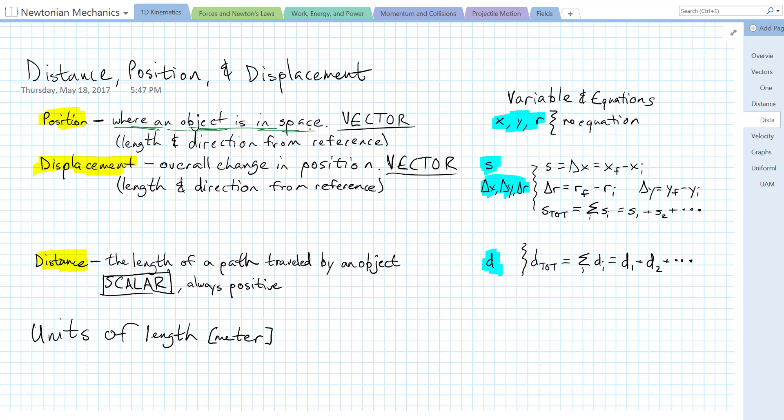If I say that you're 200 meters away from me, that doesn't tell where you are. I have to say that you're 200 meters north of me. So position is usually a length and direction from a reference point. Its variable is going to be x, y, or r.